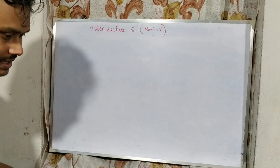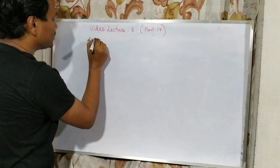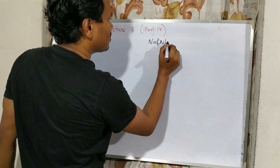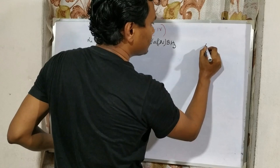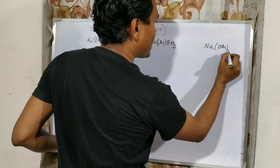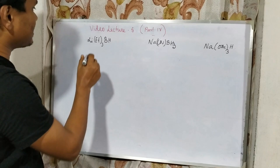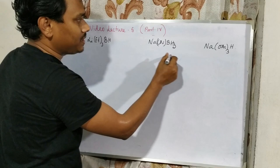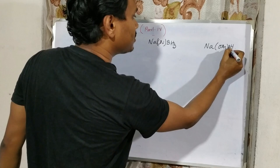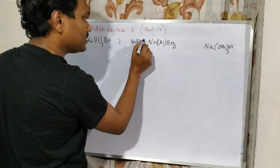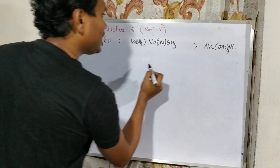Today our topic will focus on three borohydrides: lithium triethyl borohydride, sodium cyanoborohydride, and sodium triacetoxy borohydride. The main reason for choosing these reagents is that lithium triethyl borohydride is highly reactive, while sodium cyanoborohydride and sodium triacetoxy borohydride are less reactive compared to sodium borohydride. So we can say: LiEt₃BH is more reactive than NaBH₄, which is more reactive than NaCNBH₃, which is more reactive than NaOAc₃BH.